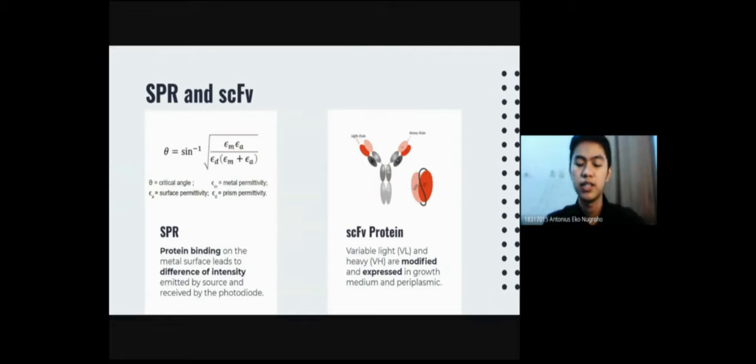And about the SCFV protein, SCFV or single chain fragment variable is the smallest functional unit of the antibody. And it consists of variable light and variable heavy, which are generally easier to be modified and expressed than the whole antibody itself. Besides, the expressed protein of SCFV can be found in both of the cell periplasmics, where it is expressed, and the growth medium as well.